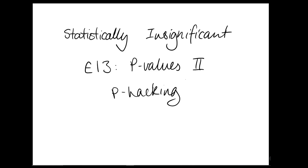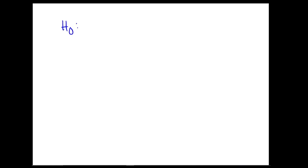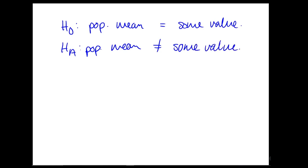Technical bit first. In the last episode, we defined p-values in the context of a hypothesis test and an observed sample statistic. So we have a null hypothesis, which says it's a status quo thing. Our example was the population mean is equal to some value. Your alternative hypothesis was that the population mean was not equal to some value.